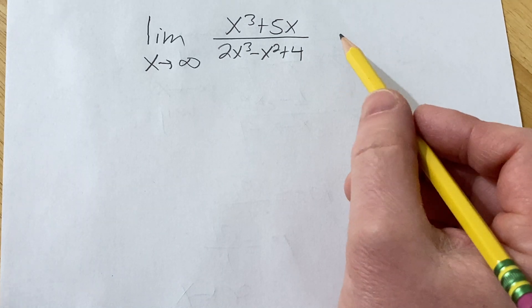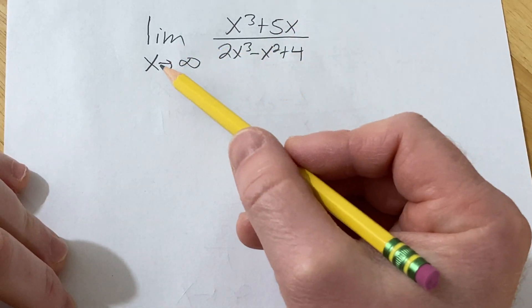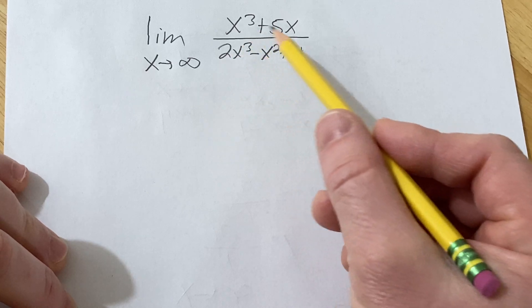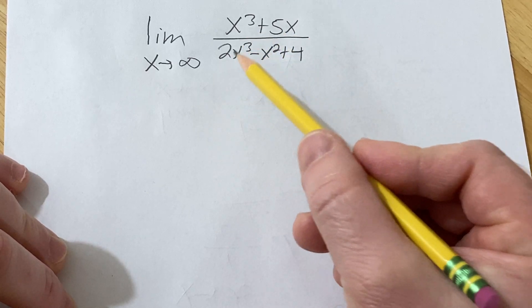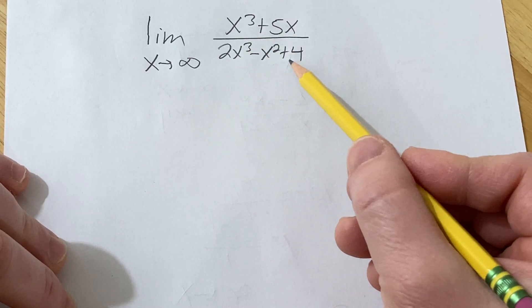Hi, in this problem we are going to find this limit. We have the limit as x approaches infinity of x cubed plus 5x over 2x cubed minus x squared plus 4.